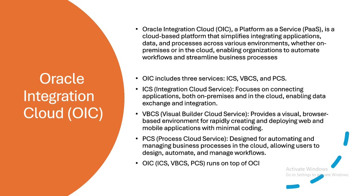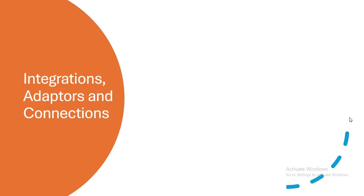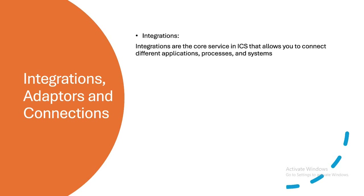Now, what are the basic components in ICS that we need to know before creating integrations? The first thing is integrations — integrations are the core service in ICS that allows you to connect different applications, processes, and systems. Within an integration we use connections, and a connection is created based on adapters.